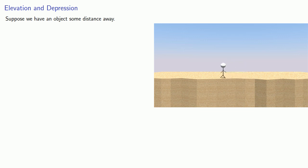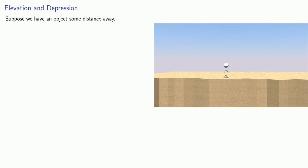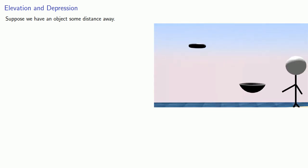To begin with, we can talk about angles of elevation and depression. And the idea is something like this. Suppose you're walking along and you see something off in the distance. The line of sight is the direct line from the observer to the object.